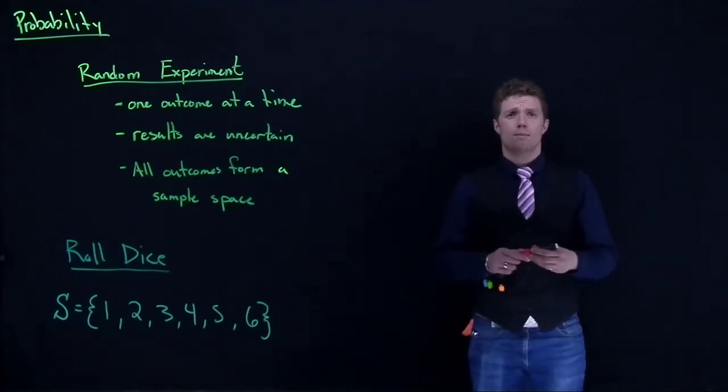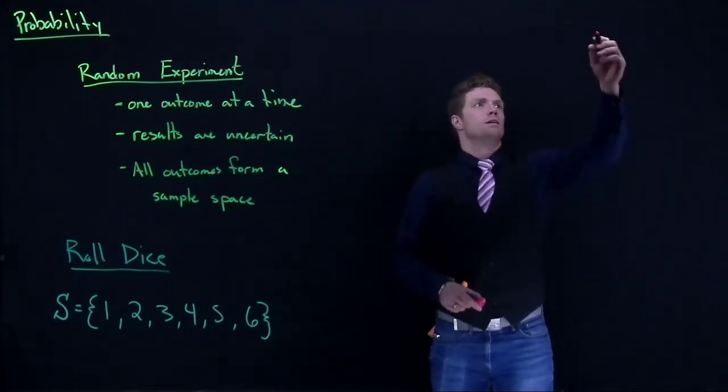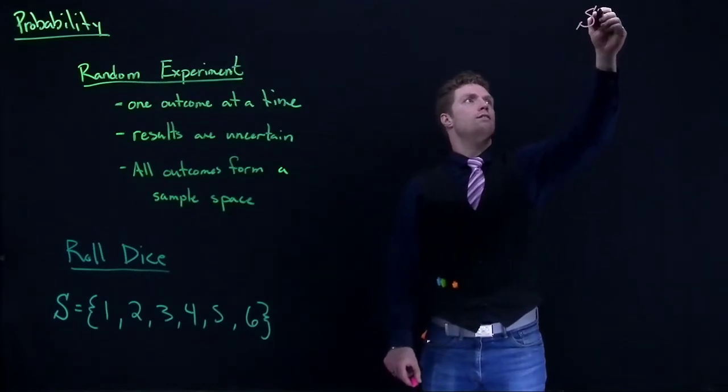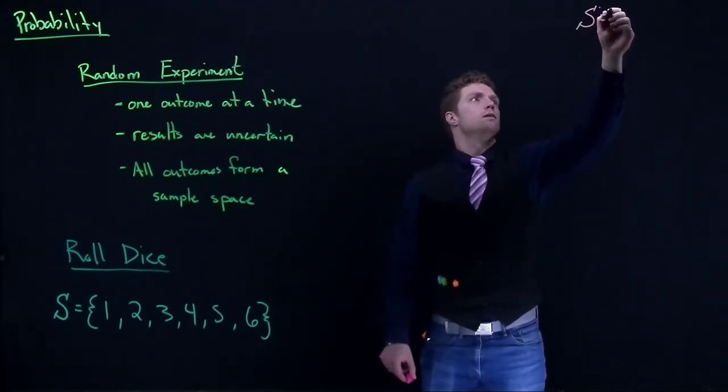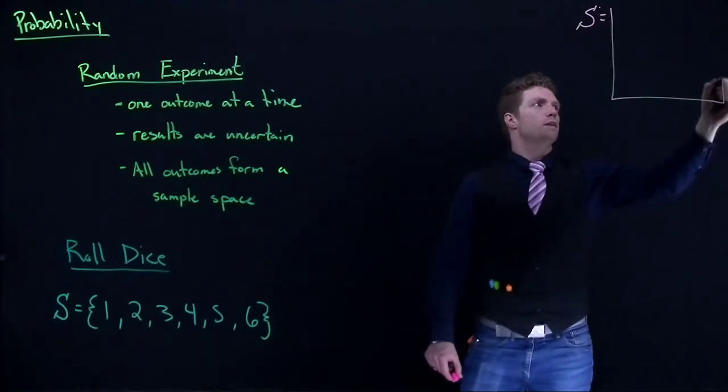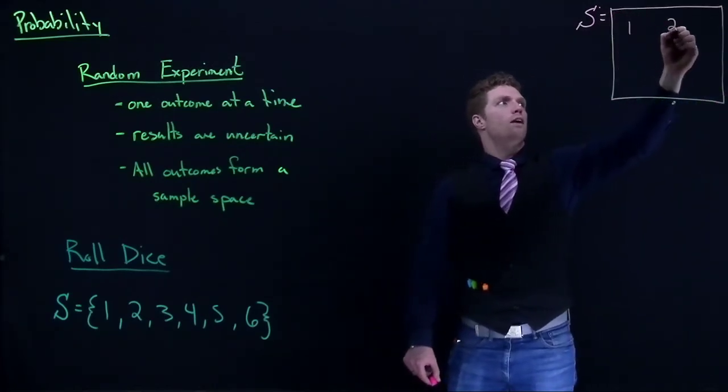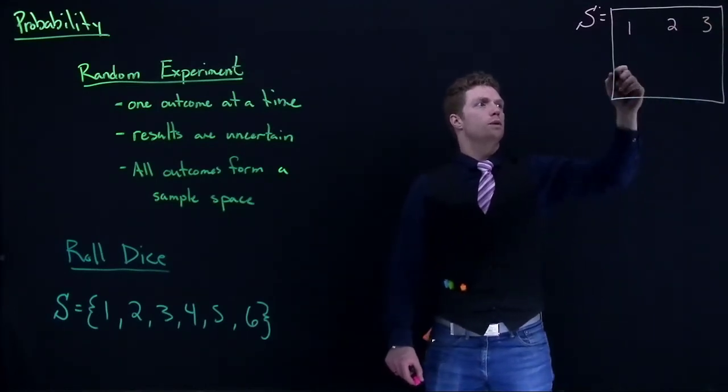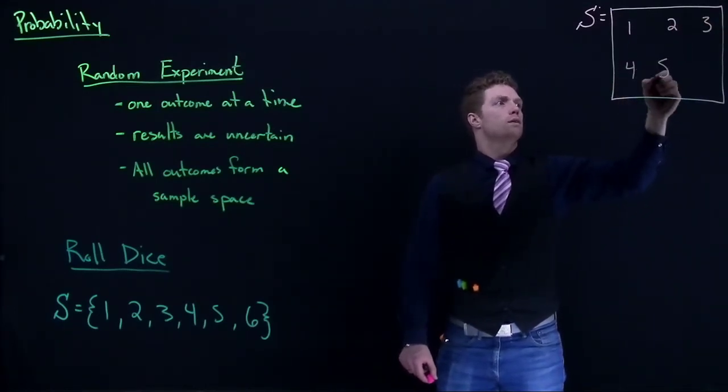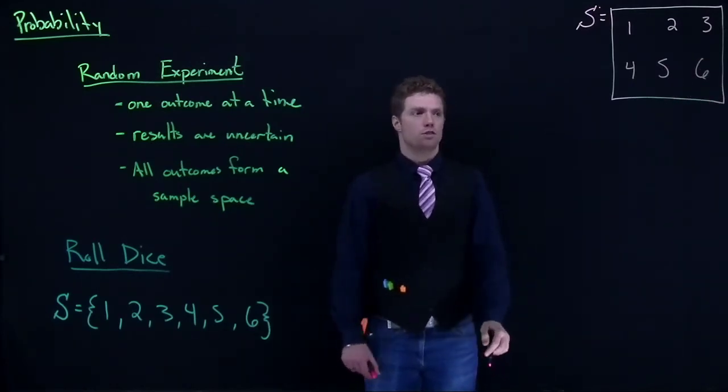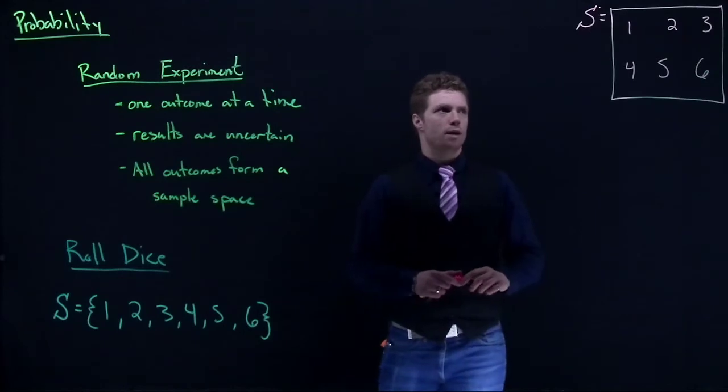Sometimes we also use a graphical representation of a sample space. Our sample space can oftentimes be written like this - we'll sometimes write it in a box and put all of our outcomes: one, two, three, four, five, and six. It's another way that we can represent our sample space.